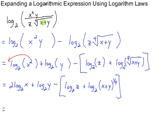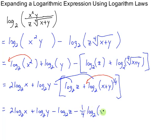And now, since I've rewritten this as an exponent, I can drop this exponent to the front. So I get 2 log base 2 of x plus log base 2 of y. Let's go ahead and distribute our negative as well. So minus log base 2 of z minus one-fourth times log base 2 of x plus y.